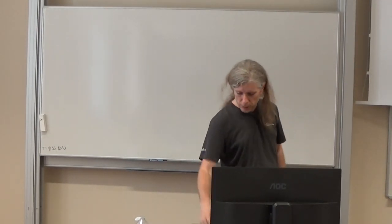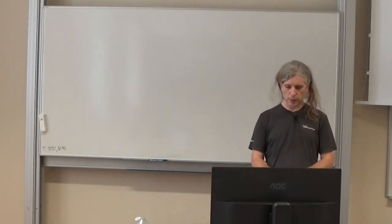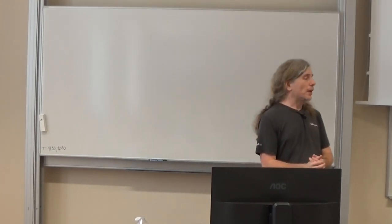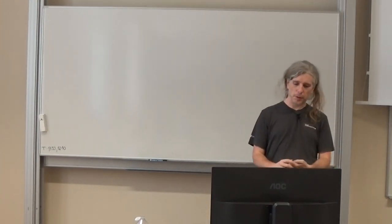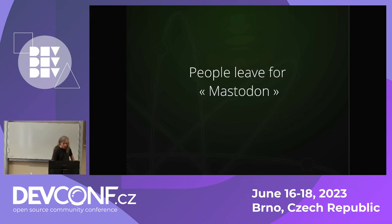Before discussing about the Fediverse and Mastodon, I will do a quick recap of the history so far. So: 1971, Elon Musk was born. 2022, he decided to buy Twitter and everybody fled to Mastodon. I said it was very short — this is a lightning talk, so that's the lightning part.